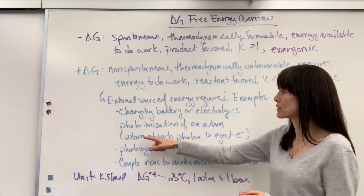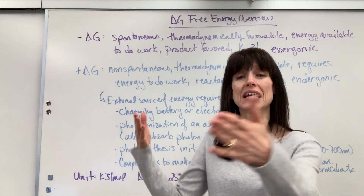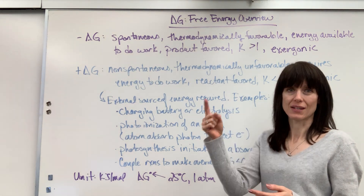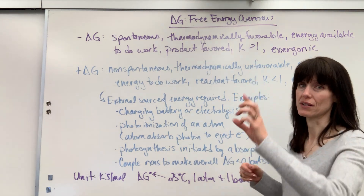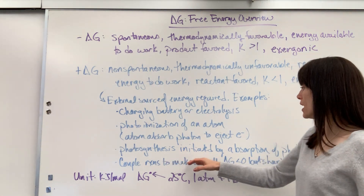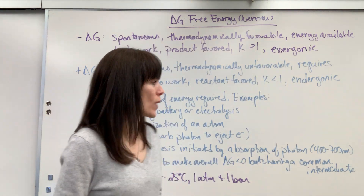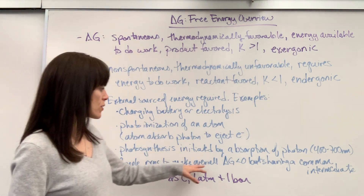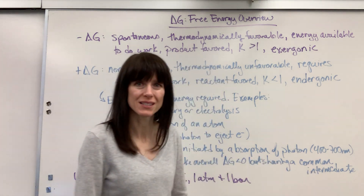Photoionization of an atom is when an atom absorbs a photon to eject an electron. You can see my room is illuminated — electricity and energy put energy into the photon so it can jump to a higher energy level, and photoionization actually ejects the electron out of the atom's energy level. Photosynthesis is huge — it's initiated by the absorption of a photon, typically in the 400 to 700 nanometer wavelength range. There are some coupled reactions where, when these reactions come together, the overall delta G is less than zero, but they share a common intermediate.